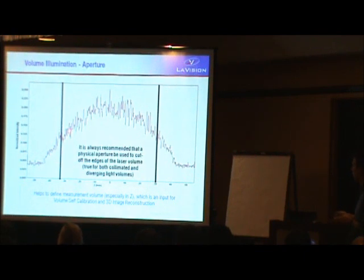So this is showing an intensity profile of a laser beam or laser sheet, and by putting on a physical aperture, you can clip off the lower intensity edges of the beam, and you also do this at the top as well to define the measurement volume.